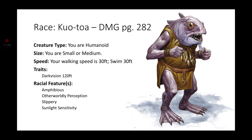Their unblinking eyes staring at you — and that is actually the next feature: sunlight sensitivity. They have unblinking eyes, so if they were on the surface in daylight, they would most definitely have a problem with the sun. Another feature they have is slippery — this gives them a bonus to break free from a grapple, which isn't exactly the most useful, but it is there. And of course, because of Tasha's Cauldron of Everything, all races released after that book now have either a +2 to one ability score and a +1 to another, or a +1 to three different ability scores.